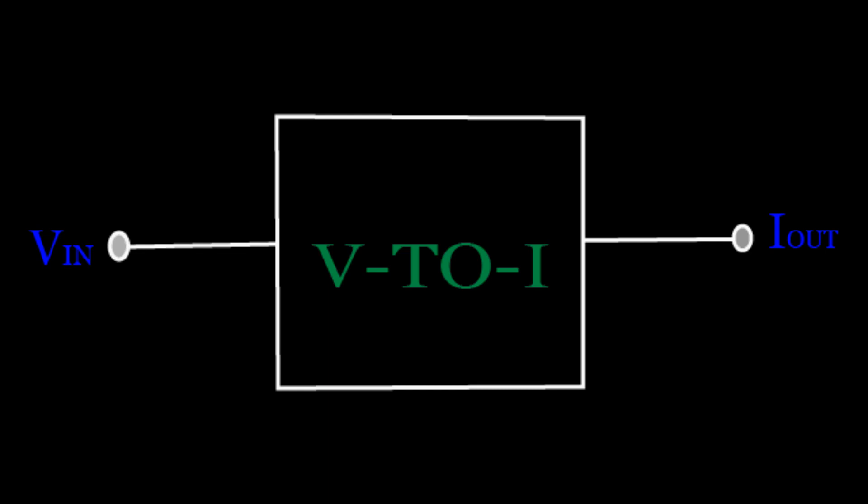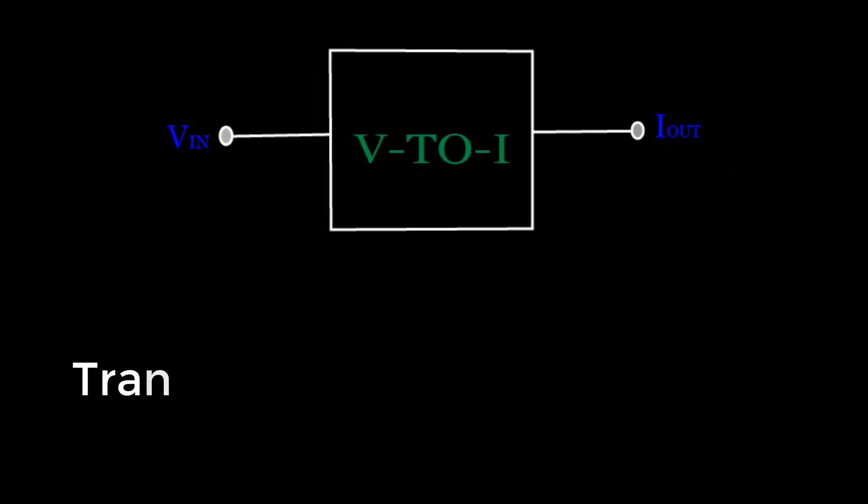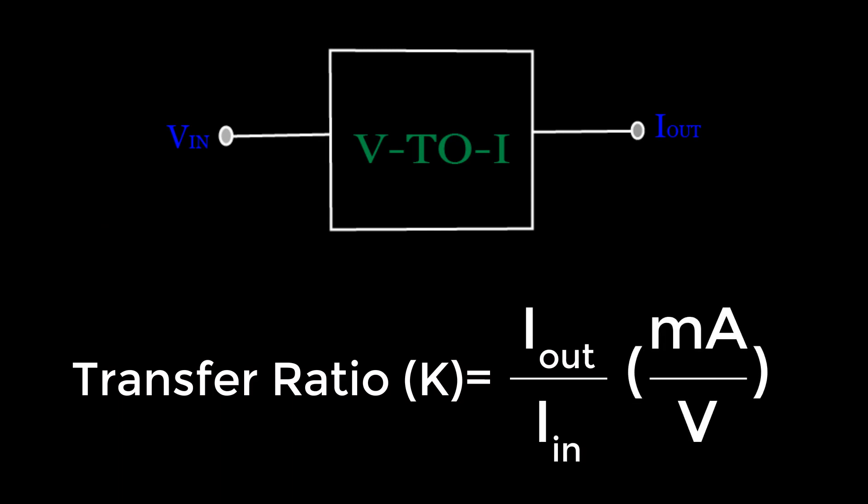So, it is clear that the resistor decides the current flow in a voltage source circuit, or it performs as a simple voltage to current converter for a linear circuit. Transfer ratio K equals I out by V in, measured in mA per V.